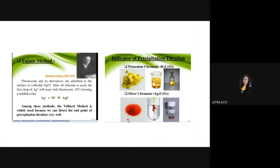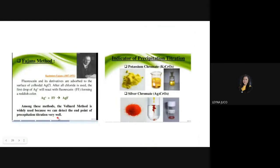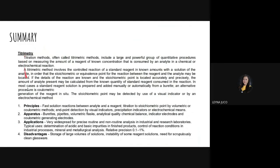The last type is precipitation titration, based on the formation of insoluble precipitates when solutions of two reacting substances are brought into contact. The principle is that the quantity of added precipitating agent equals the substance being precipitated — based on the law of equivalence. For example, silver (aqueous) plus chloride (aqueous) produces silver chloride (solid) — a precipitate. Types of precipitation titration include the Mohr method (uses chromate as indicator), the Volhard method (uses thiocyanate/SCN), and the Fajans method (uses fluorescein). The Volhard method is widely used because it can detect the endpoint of precipitation titration very well. Clean glassware is essential — even one drop of water error can ruin the experiment.